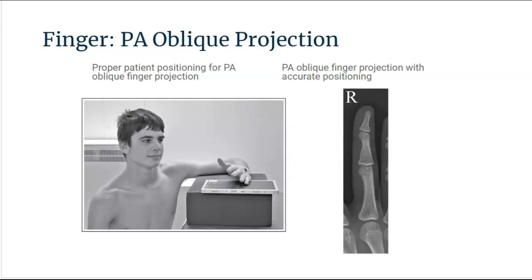There should be no overlap of the adjacent fingers. The interphalangeal and metacarpal phalangeal joints are demonstrated as open, and the phalanges should not be foreshortened. The proximal interphalangeal joint is at the center of the exposure field, and the finger and half of the metacarpal should all be included within the exposure field.